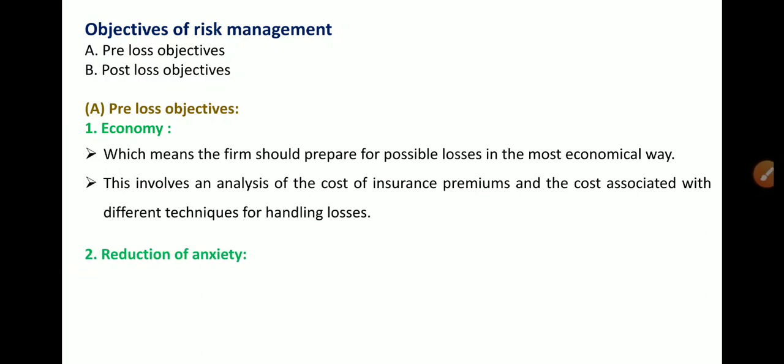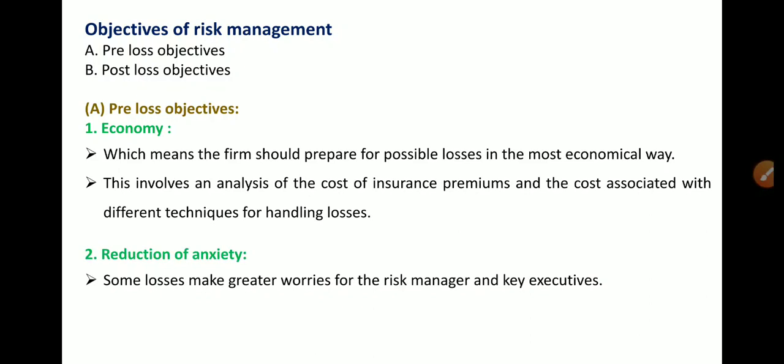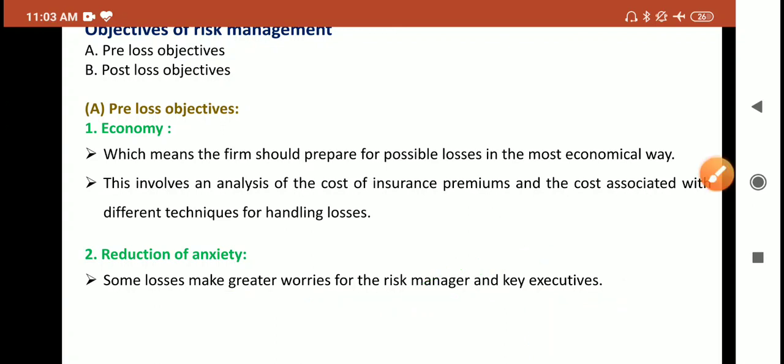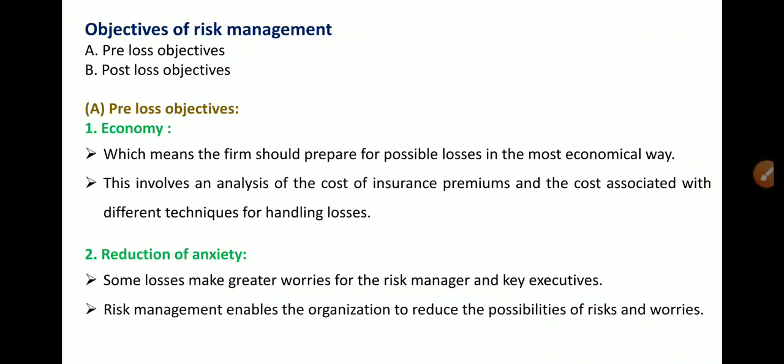The second pre-loss objective is reduction of anxiety. Some losses create greater worries for the risk manager and key executives. In the organization, executives and risk managers will manage risk, and sometimes certain kinds of risks will create greater worry for them. Risk management enables the organization to reduce the possibilities of risks and worries for the risk managers and key executives. This is also one objective.